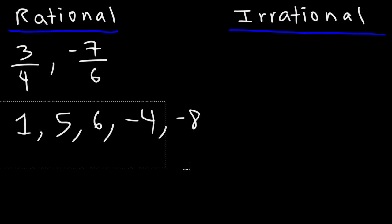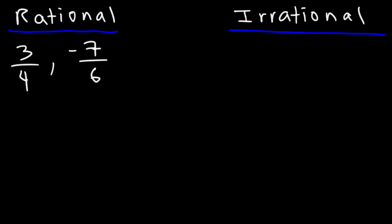So here's a question for you. Is an integer a rational number or an irrational number? For example, the integer 8 — would you put it in the left column or the right column? So can we write 8 as a ratio of two integers? We can write 8 as 16 divided by 2. So 8 is a rational number.